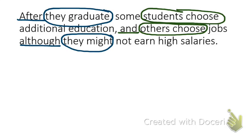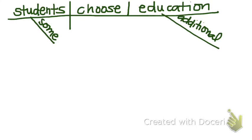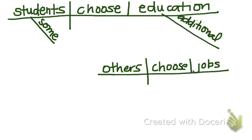We have two independent clauses — some students choose additional education, and others choose jobs — and we have two dependent clauses: after they graduate, and although they might not earn high salaries. We need to begin diagramming this compound-complex sentence by diagramming the main independent clause first. Next, we'll diagram the second independent clause and connect them using the coordinating conjunction 'and.' Now that the compound part has been diagrammed, we need to add our two dependent clauses, diagramming the subject-predicate parts first.